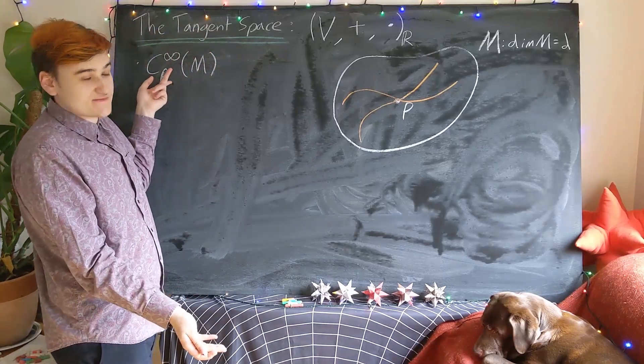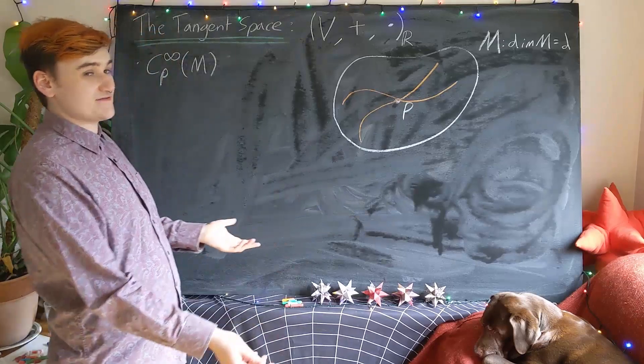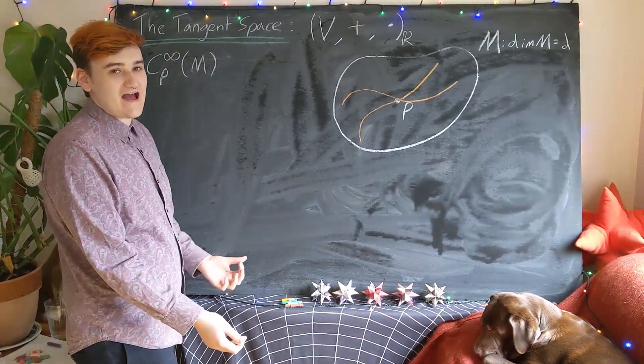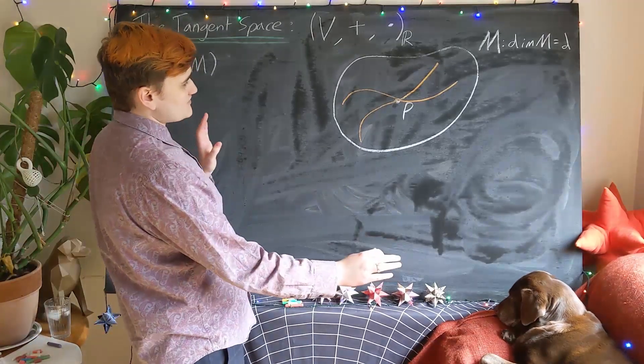So this set of all smooth functions on our manifold that passes through the point is a vector space because we can add functions and we can scalar multiply them.